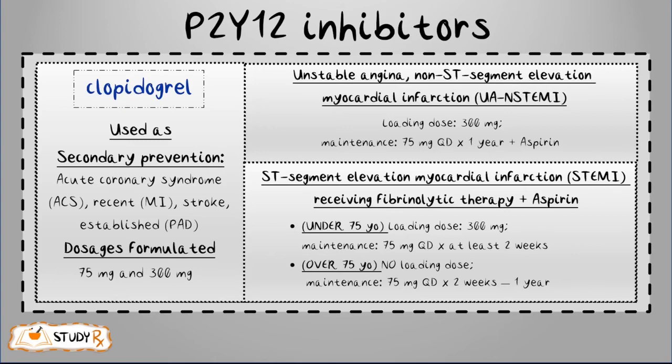In unstable angina and non-ST segment elevation myocardial infarction (UA/NSTEMI), also referred to as NSTE-ACS, according to the ACC/AHA guidelines, a physician may start the patient on a loading dose higher than the maintenance dose — that's where the 300 mg comes in. After that, the patient is on a maintenance dose of 75 mg for one year along with aspirin, which is continued indefinitely.